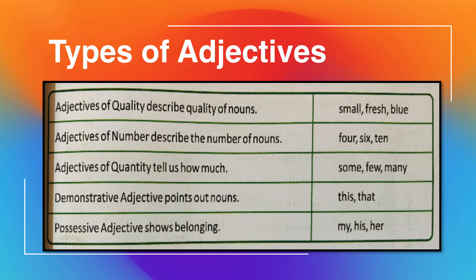Fourth, demonstrative adjective points out a noun — words like 'this' and 'that'. Wo demonstrate karte hai, point out karte hai nouns ko. Fifth, possessive adjective shows belonging — kisko belong karta hai koi cheez — such as my, his, her.